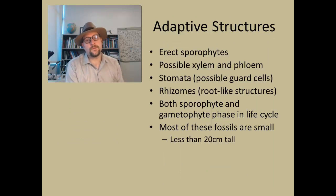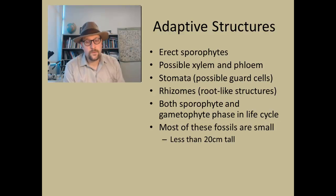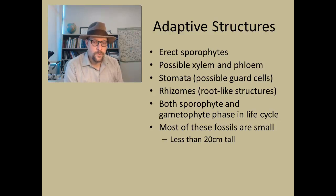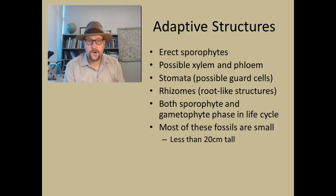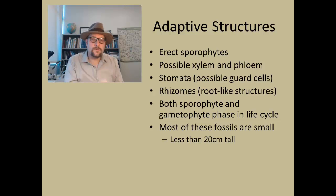Some of the adaptive features we see in these fossils include erect sporophytes, the possibility of xylem and phloem in some of these, evidence of stomata and possible guard cells, rhizomes — the root-like structures that hold these plants down to the ground — and both sporophyte and gametophyte phases in a life cycle, very similar to what we see in modern bryophytes. Most of these fossils are really small — less than 20 cm tall — so you're talking about sort of grass-sized or moss-sized land plants at this period of time, nothing bigger.